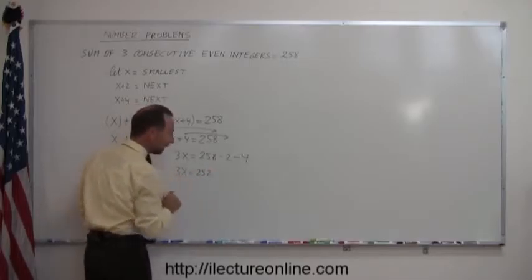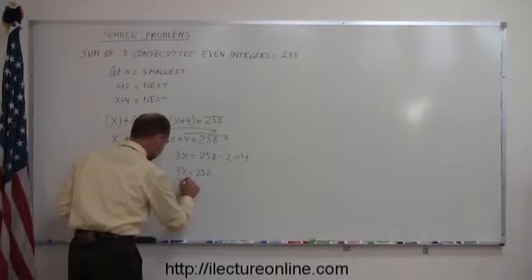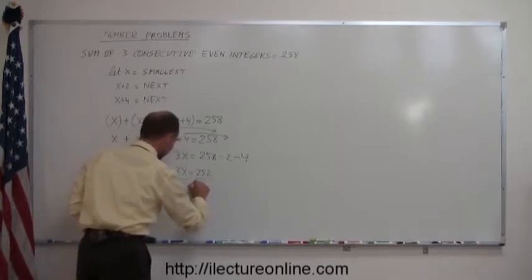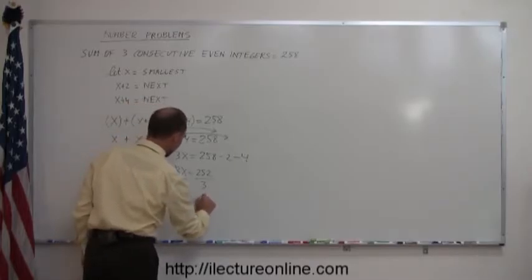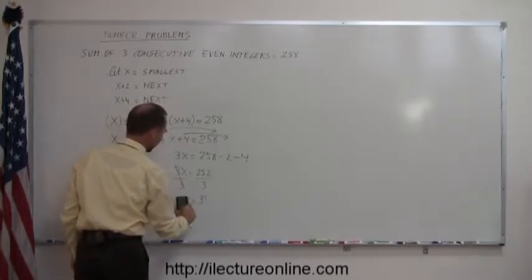And finally, I divide both sides of the equation by the numerical coefficient in front of the x, divide both sides by 3, and I get x equals, that's 34. Oh, not 34, 84.